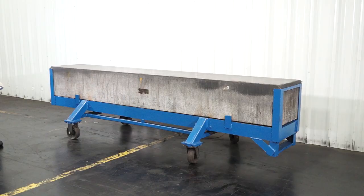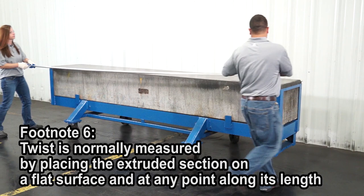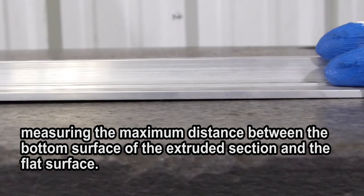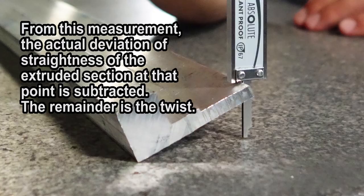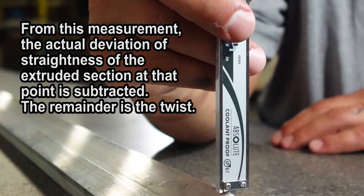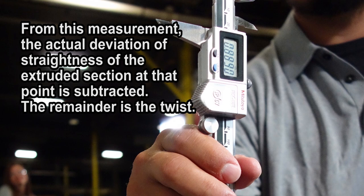Footnote 6: Twist is normally measured by placing the extruded section on a flat surface and at any point along its length measuring the maximum distance between the bottom surface of the extruded section and the flat surface. From this measurement, the actual deviation of straightness of the extruded section at that point is subtracted. The remainder is the twist.